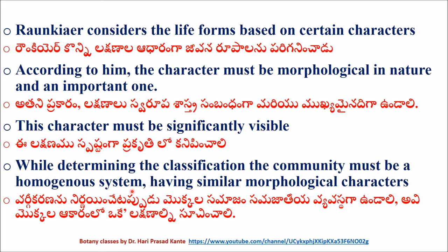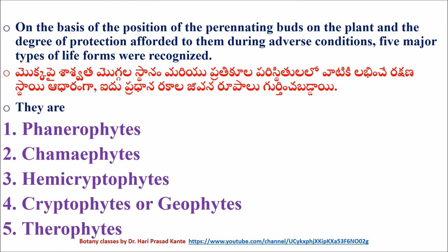On the basis of the position of the perennating buds on the plant and the degree of protection afforded to them during adverse conditions, five major types of life forms were recognized.